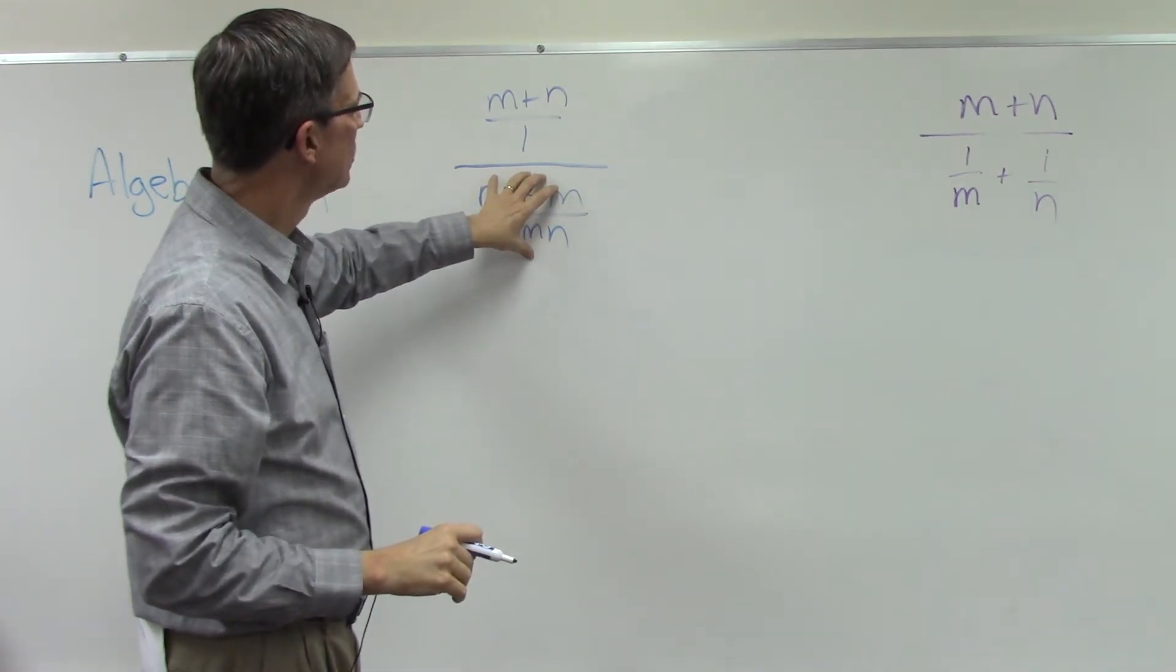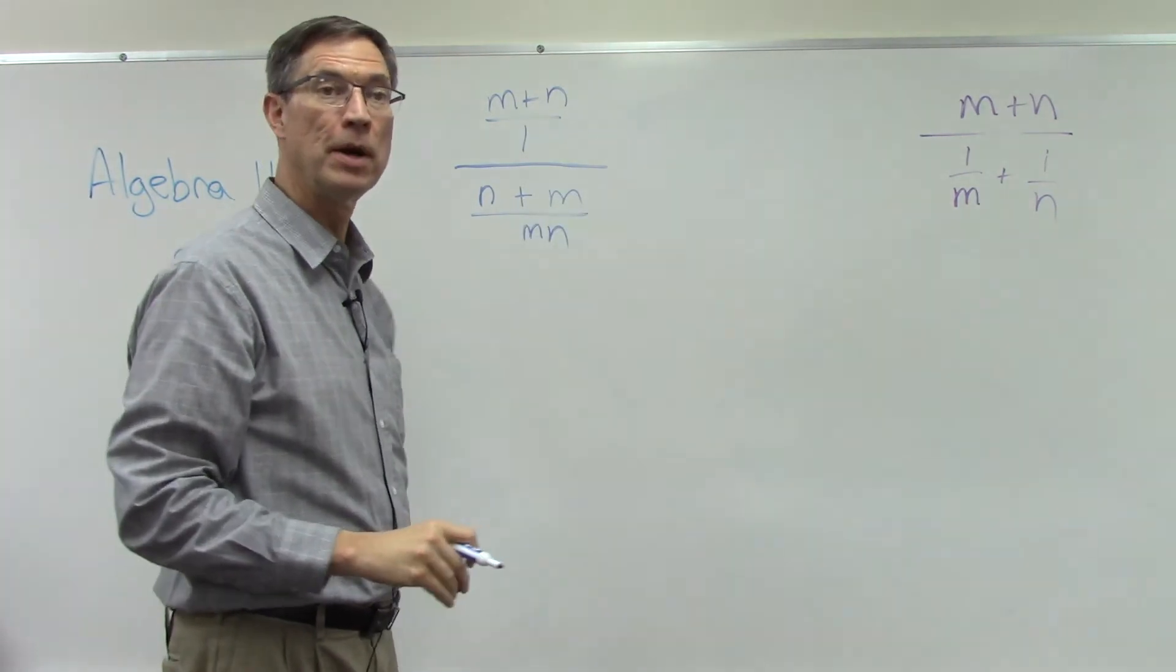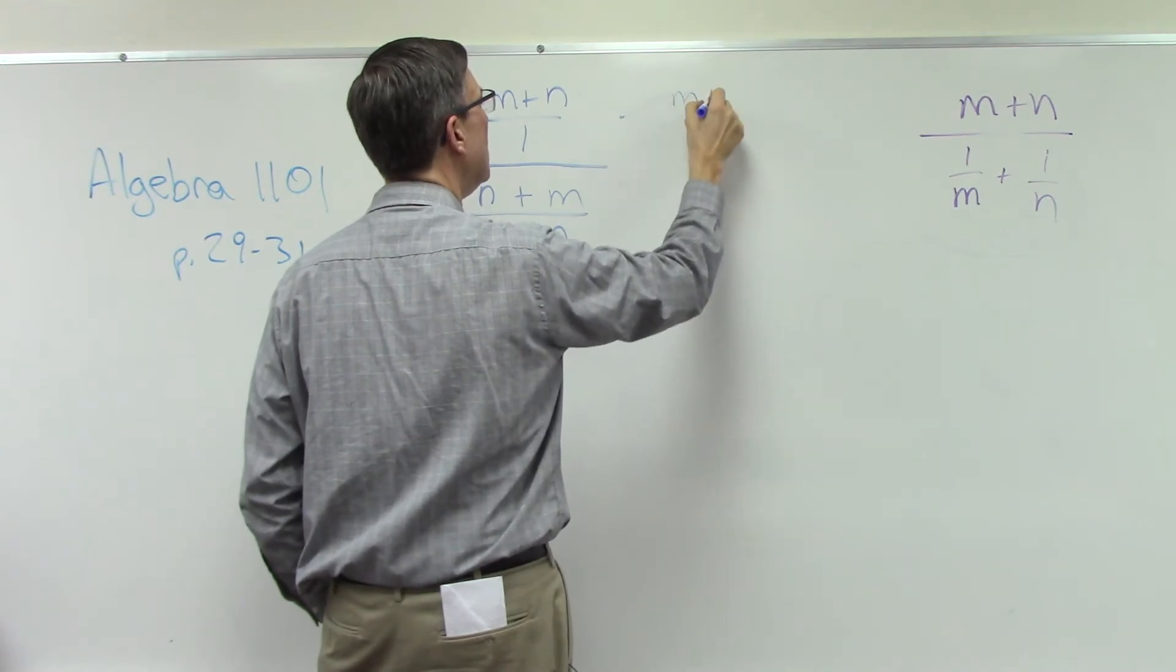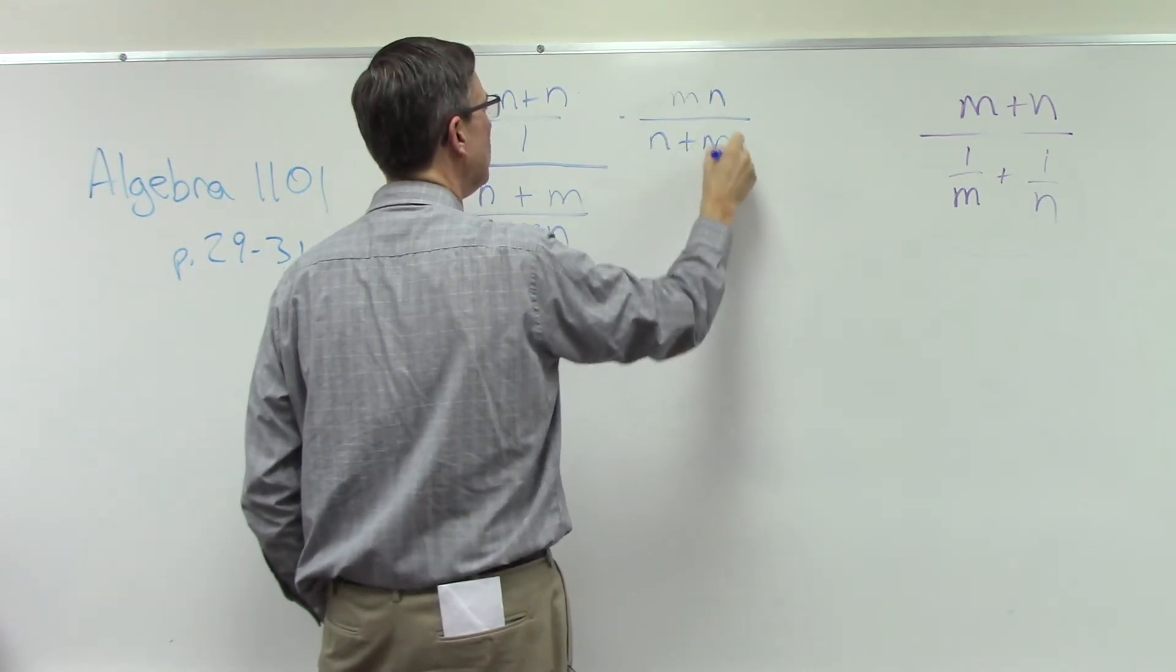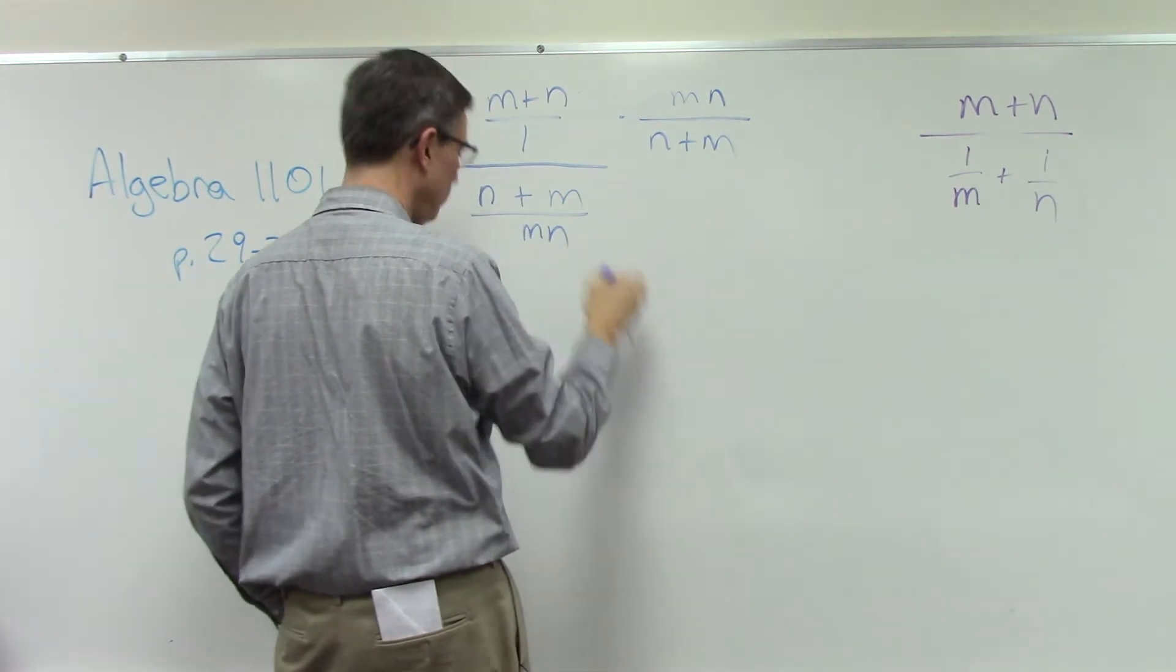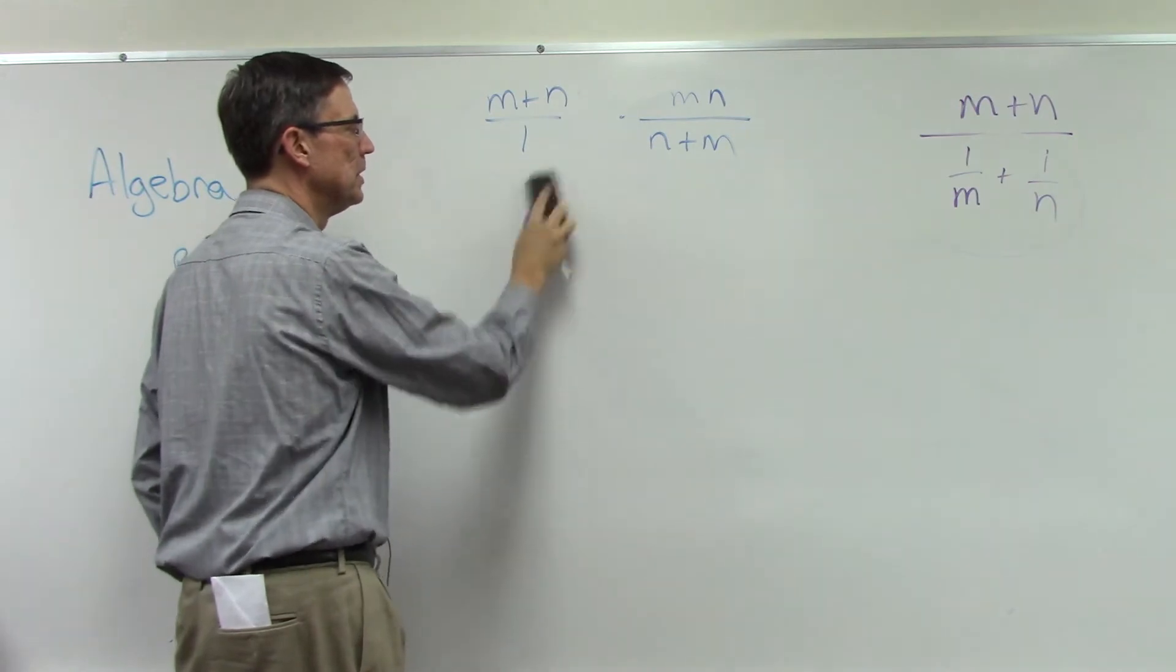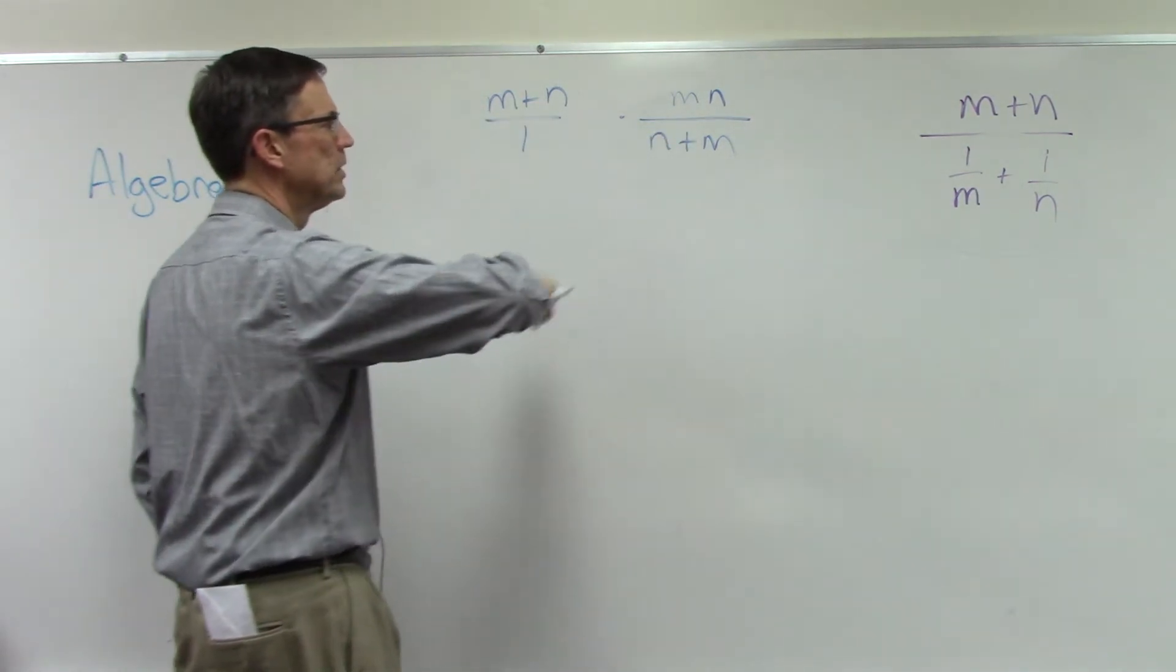So remember, dividing by a fraction, we can turn it around, flip it up here and multiply by the reciprocal. So I'm going to multiply times mn over n plus m. So now that I did that, I can erase this because that's the same thing. I was dividing by that, now I'm multiplying by the reciprocal.